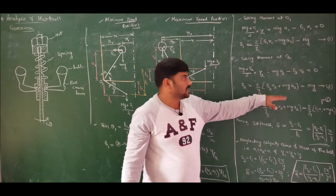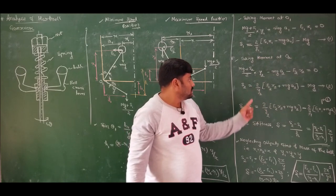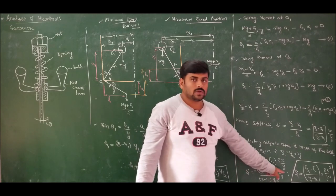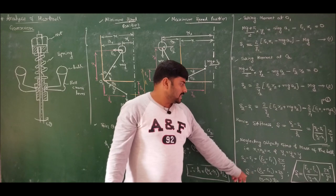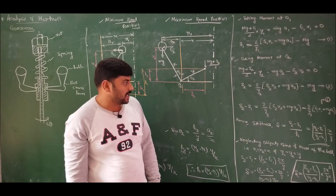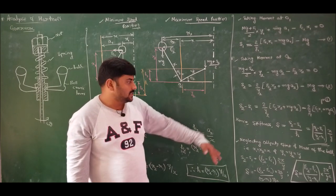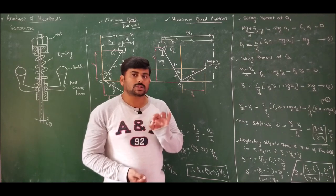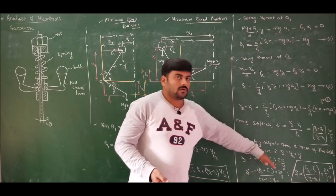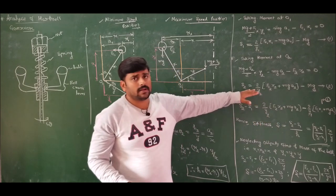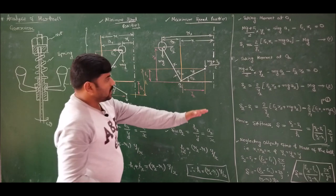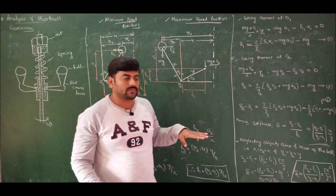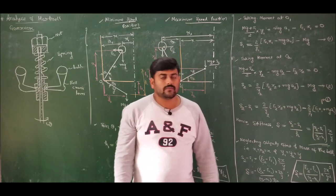This is the general expression for spring stiffness always used unless the problem specifies to consider the obliquity effect. If obliquity effect and mass of ball are not specified, always use: s equals (fc2 minus fc1) divided by (r2 minus r1) times 2x² over y². If obliquity effect is to be considered, go through the full derivation to get equation 3.